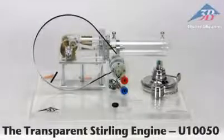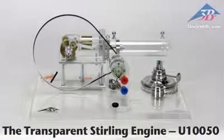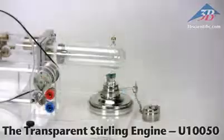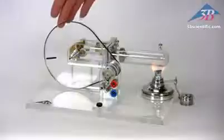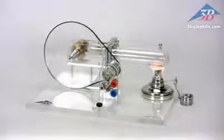The transparent Stirling engine item number U10050 from 3B Scientific. The Stirling motor presents quantitative investigations of Stirling's cycle and can be operated in three different modes.